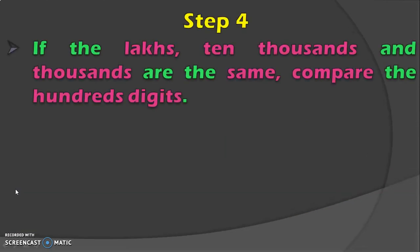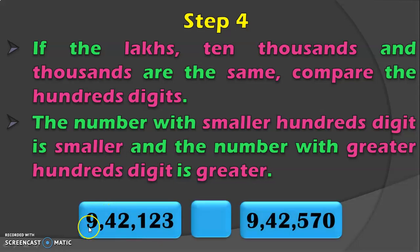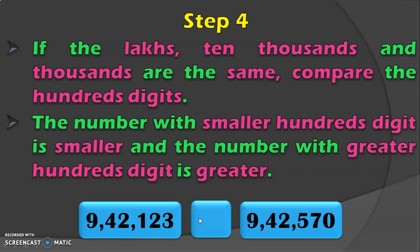Suppose the lakhs, 10,000th and 1,000th places are also having the same number in both numbers. In such cases, compare the 100th digit. The number with the smaller 100th digit is smaller and the number with the greater 100th digit is greater. For example, 9,04,2123 and 9,04,2570 have the same lakhs, 10,000th and 1,000th digits. So we look at the 100th digit where we have 1 and 5. Since 1 is lesser than 5, we conclude 9,04,2123 is lesser than 9,04,2570.